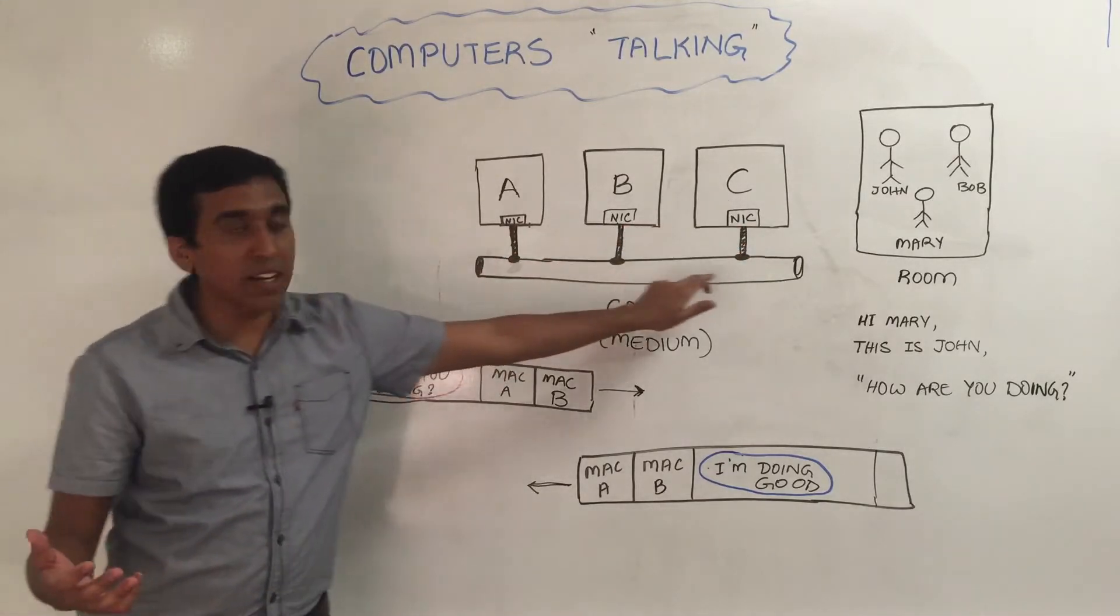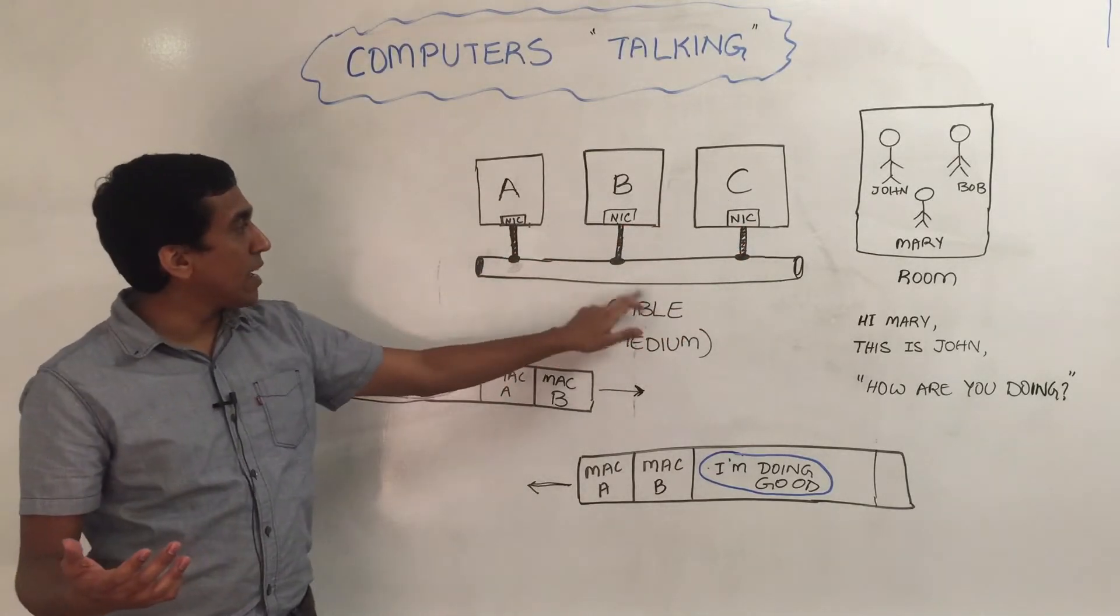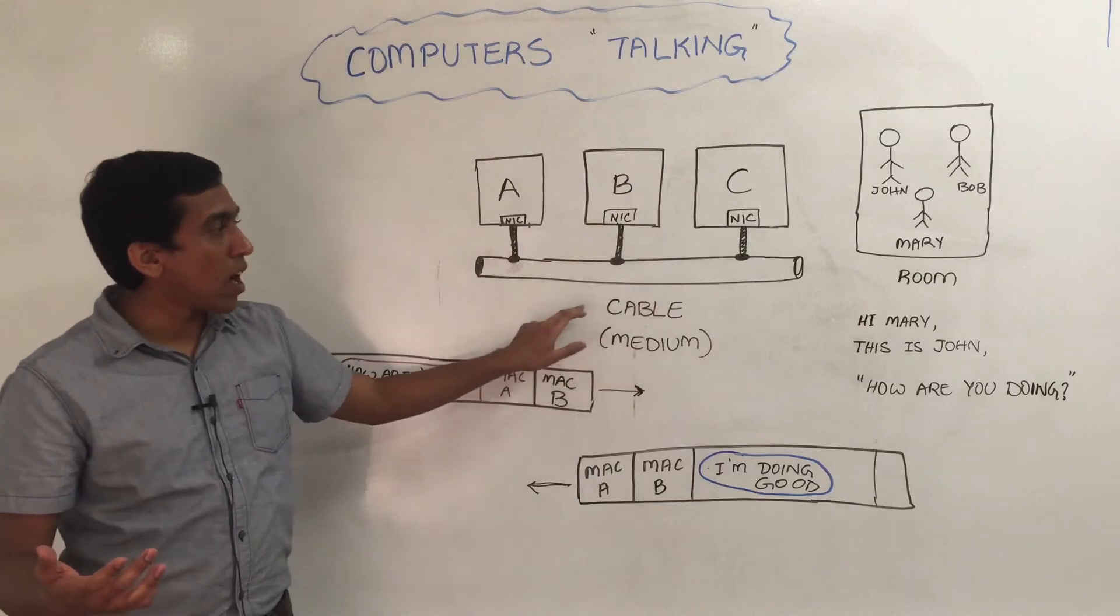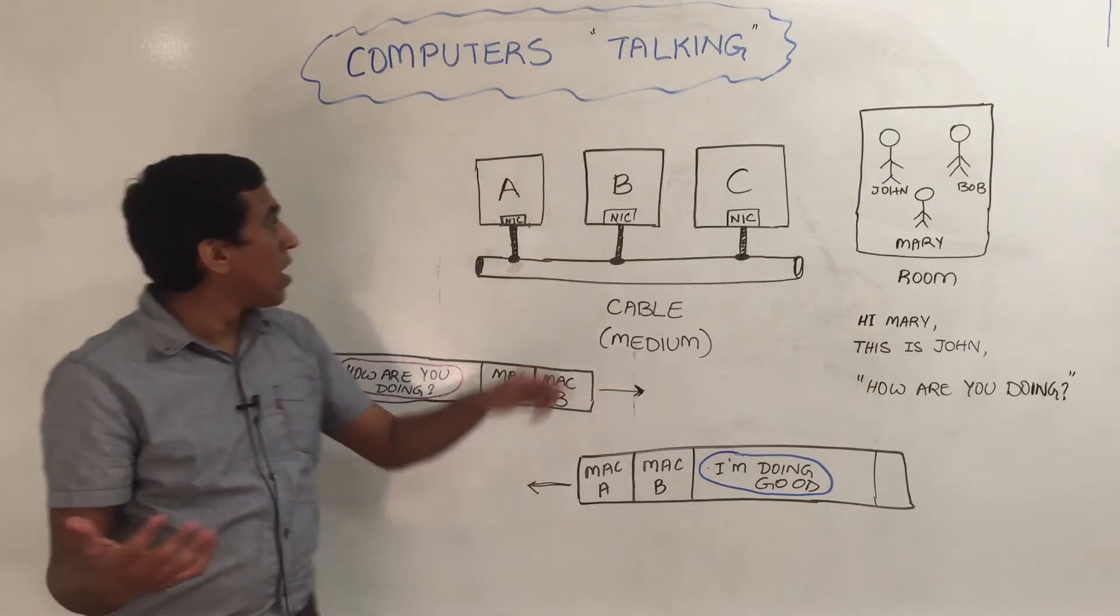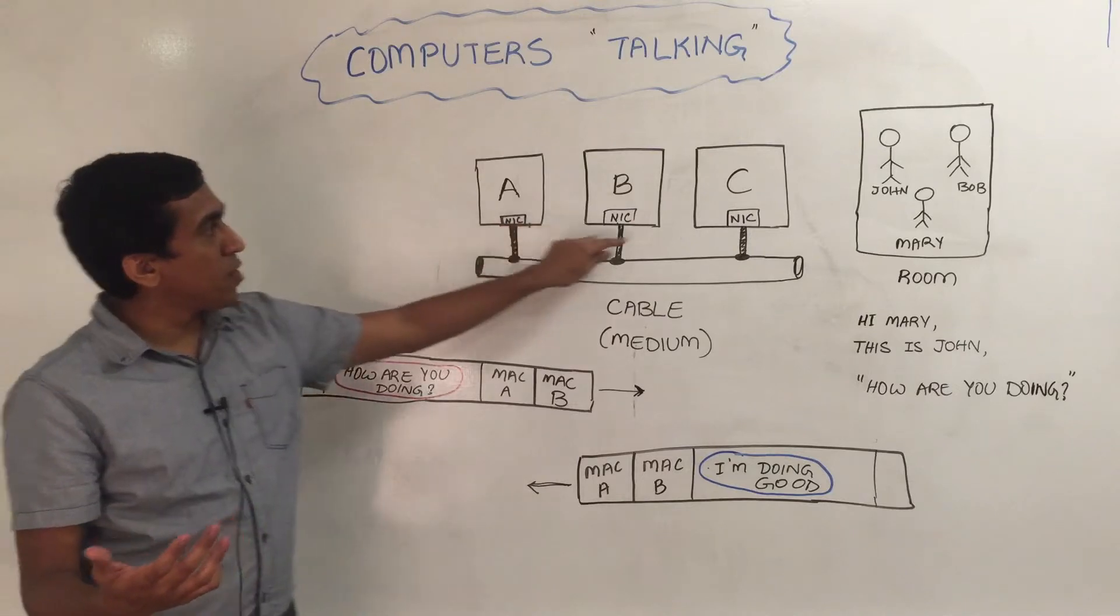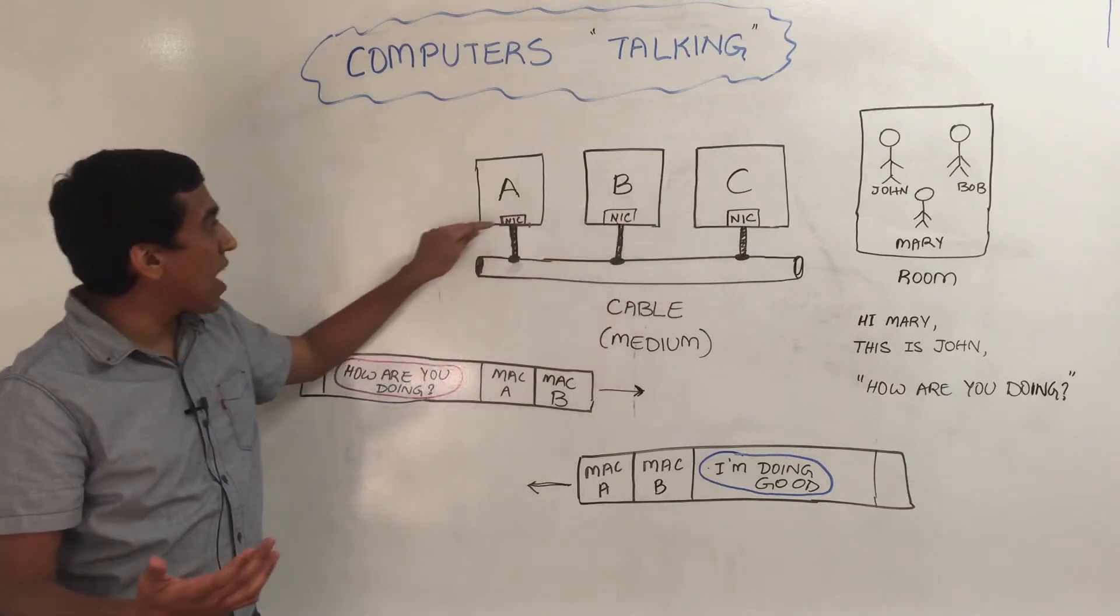In this example, all these three computers are sharing a cable. This is how networks were built in the past. So you have NIC cards for each of these computers, and they have their own MAC addresses.